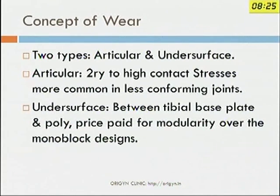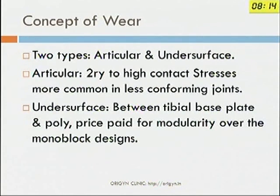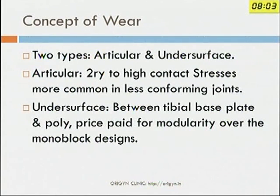Another important concept before we move on to individual joints is the concept of wear. There are two primary types: articular and undersurface wear. Articular wear is secondary to high contact stresses and is more common in less conforming joints. Undersurface wear occurs between the tibial base plate and the poly — it is the price we pay for modularity and does not occur in monoblock designs.